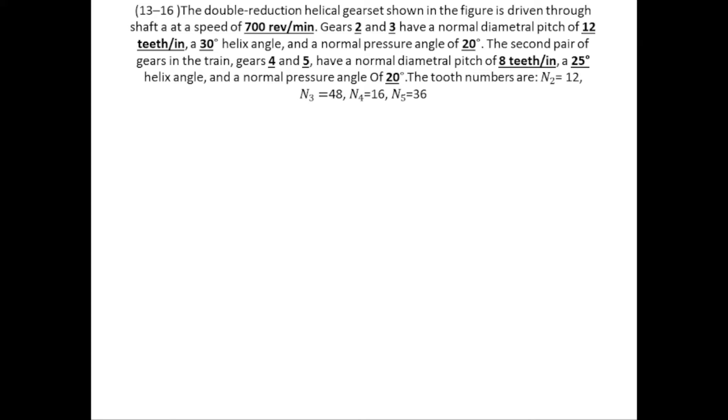In today's lecture we will be doing a problem related to helical gears. We have a set of gears in which we will reduce the speed in two stages, called a double helical reduction gear. We have three shafts: shaft A, B, and C. Shaft A is driven by a power source, so it is the driver shaft. Gear 2 is mounted on shaft A, and gear 3 is mounted on shaft B.